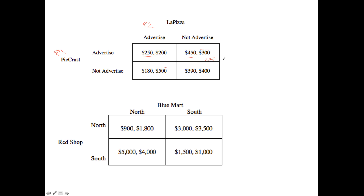One of the things AP Micro frequently tests you on is identifying dominant strategies. A dominant strategy is essentially a strategy in which the player would always play that strategy regardless of what the other player does. In this case, from the overall payoff matrix, PieCrust will always choose to advertise — when LaPizza advertised, PieCrust chose to advertise, and when LaPizza did not advertise, PieCrust still chose to advertise. So this is a dominant strategy for PieCrust.